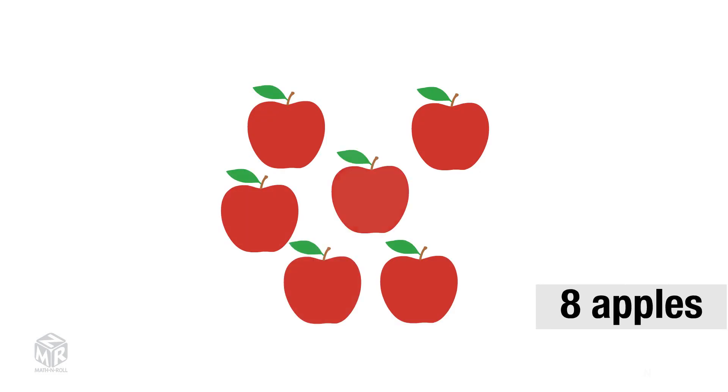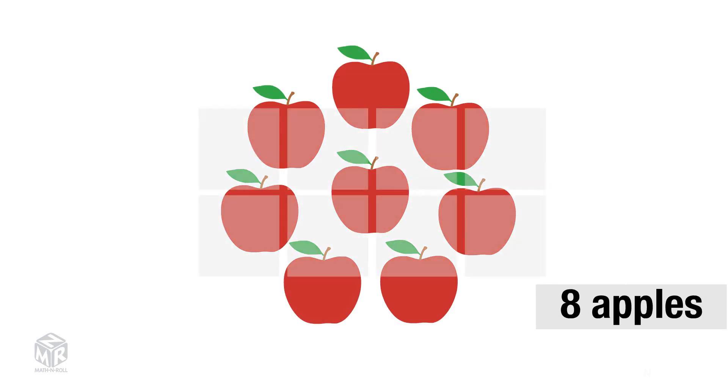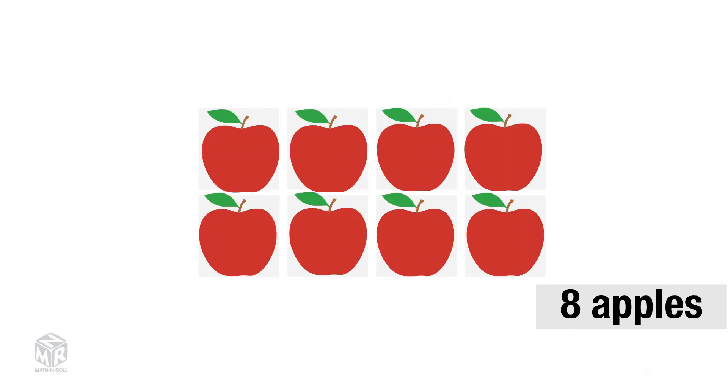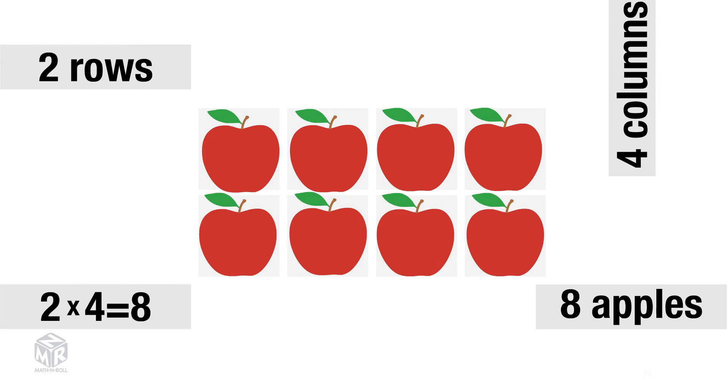Let's say we have 8 apples. We can make several different arrays using these apples. The first array has 2 rows and 4 columns. This shows that the multiplication sentence is 2 times 4, which equals 8.